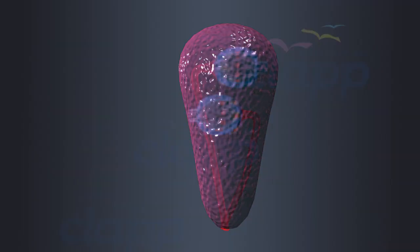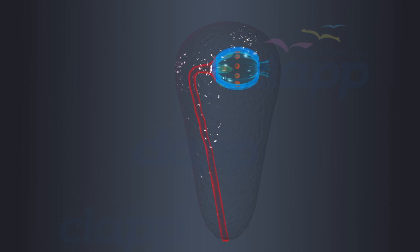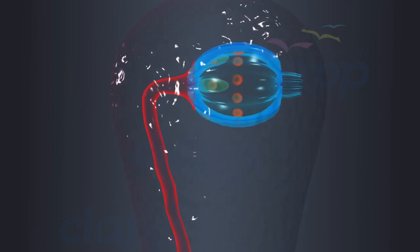Papillae contain touch sensors that help us sense the texture of the food we eat. Taste buds are specialized sensory organs located within the papillae.